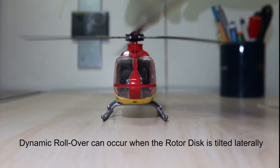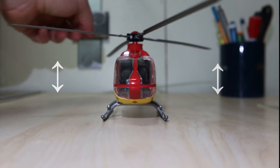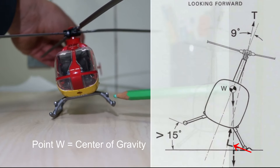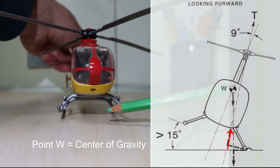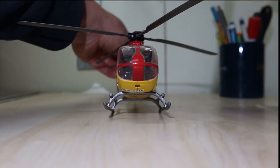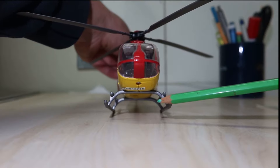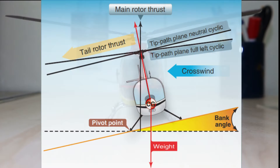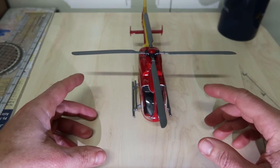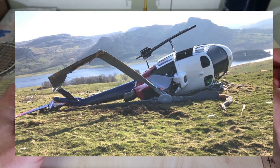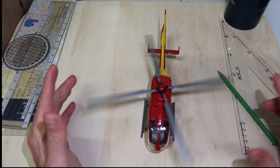Dynamic rollover can occur when the rotor disc is tilted laterally, causing the horizontal component of thrust to form a moment arm about one of the skids. Normally the tilting moment is slight and is counterbalanced by a restoring moment acting between the aircraft's center of gravity and the lower skid. But if the tilting moment is sufficiently strong and is aided by a slope or bank angle which reduces the restoring moment, then rollover can occur. If the tilt angle of the disc is small, so too will be the horizontal component of thrust and the risk of dynamic rollover is very small.